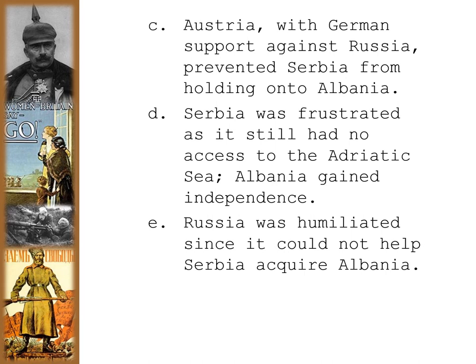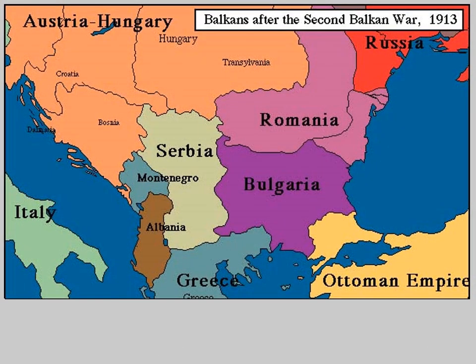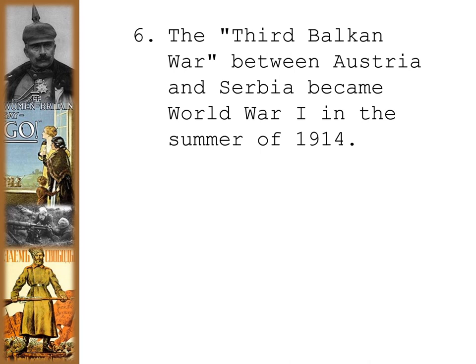Serbia was frustrated as it still had no access to the Adriatic Sea. Russia was humiliated since it could not really help Serbia acquire Albania. The Third Balkan War between Austria and Serbia ultimately became the beginning of World War I in the summer of 1914.